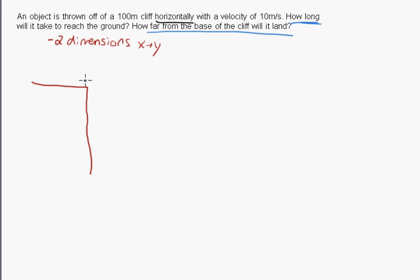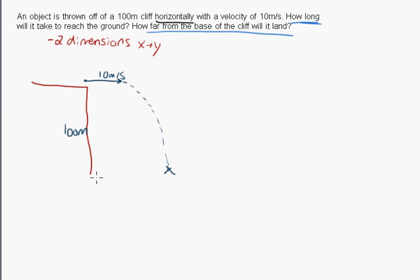We have our object here, and it's flying off horizontally at 10 meters per second from a 100-meter cliff. This object is going to fly down and hit the ground, and we do not know the horizontal displacement from the base of the cliff.